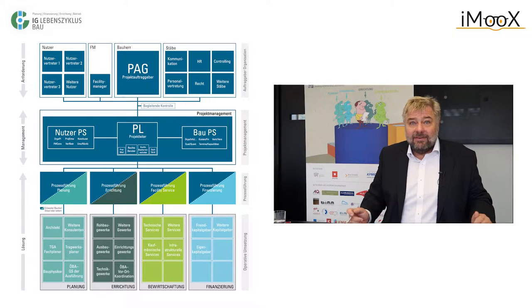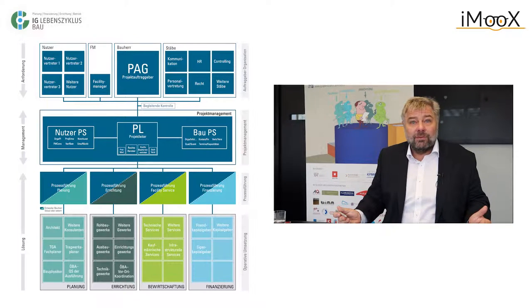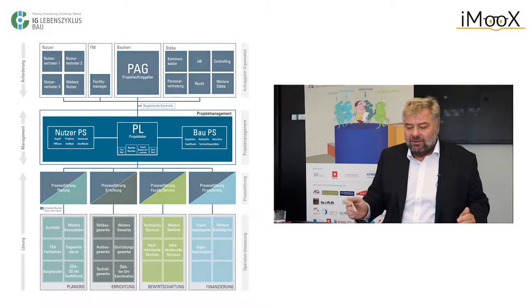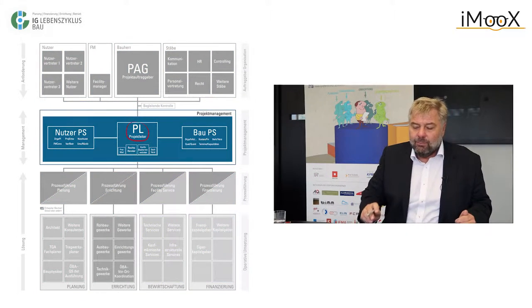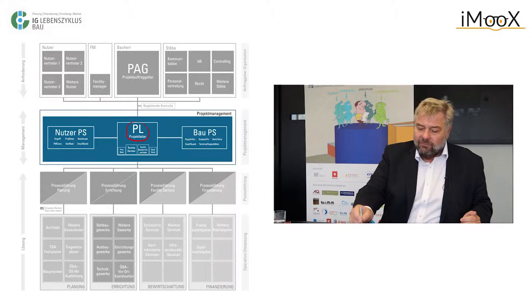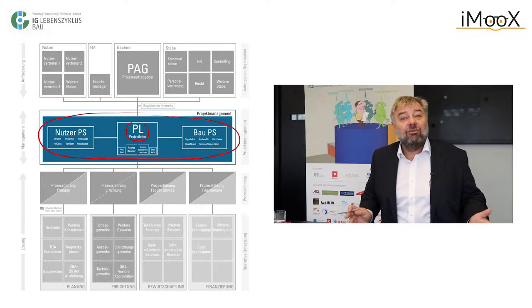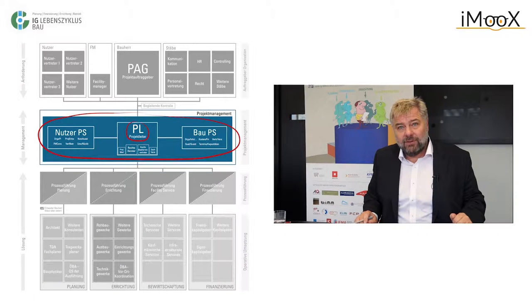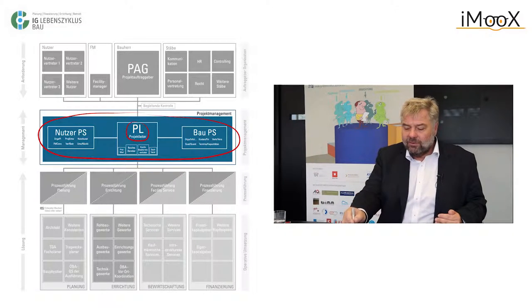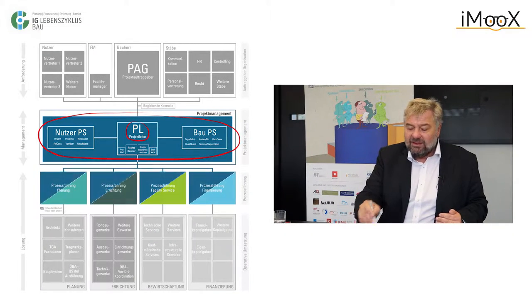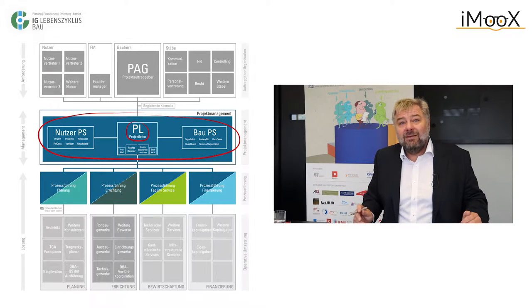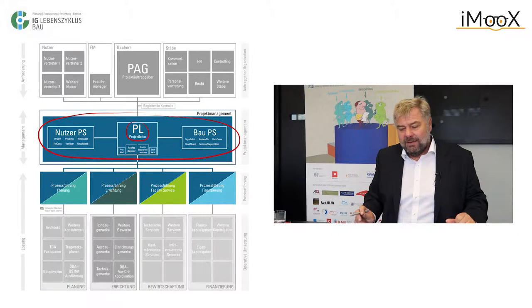Wie Sie bereits in der letzten Einheit bei Professor Achammer gehört haben, hat der Bauherr eine Organisation aufzubauen. Es ist ja ein Unternehmen auf Zeit. Und er entscheidet, wen er in die Projektleitungsrolle setzt und wie er diese Managementrolle – also letztlich die Geschäftsführung des Bauprojektes – aufzubauen hat. Er muss entscheiden, welche Dinge er selbst machen will und welche er fremd vergibt. Insbesondere auf dieser Prozesssteuerungsebene ist es wichtig, diese Entscheidung zu treffen und später auch für die Abwicklungsmodelle und Beschaffungsmodelle klar zu kriegen, welche Dinge ich wie zusammenfassen will.